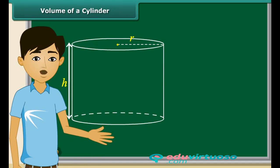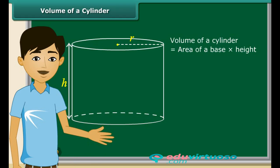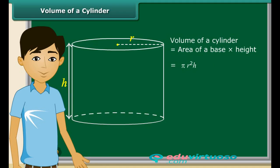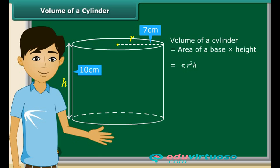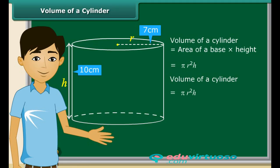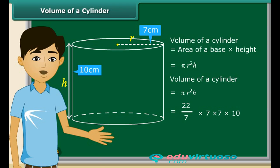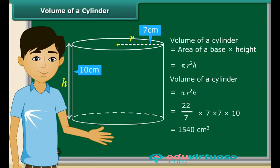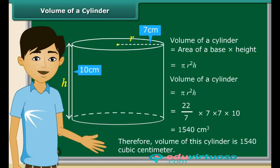Now we will calculate the volume of a cylinder, which is very easy to calculate. This cylinder has radius r and height h. For calculating volume, we multiply the area of the base with the height. So volume of a cylinder is equal to πr²h. For a closed right circular cylinder of radius 7 centimeters and height 10 centimeters, substituting: (22/7) × 7 × 7 × 10, this gives 1540 cubic centimeters.